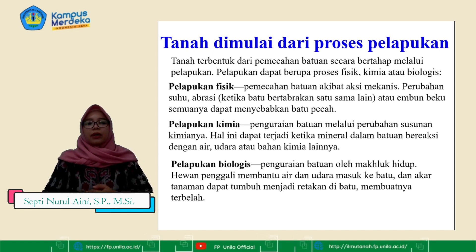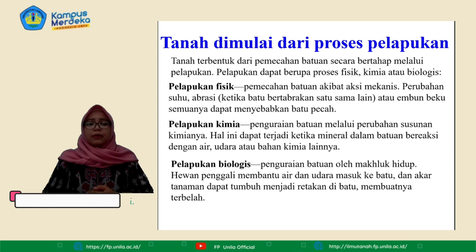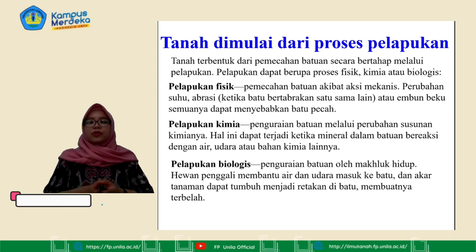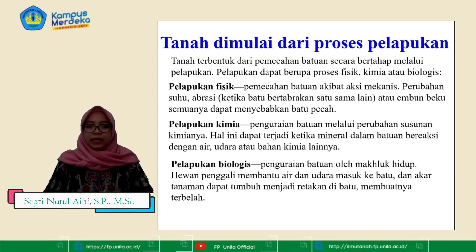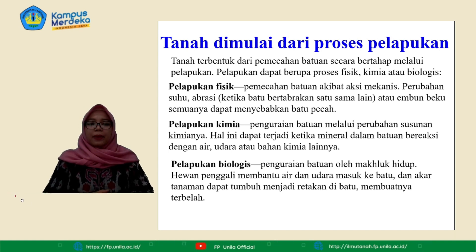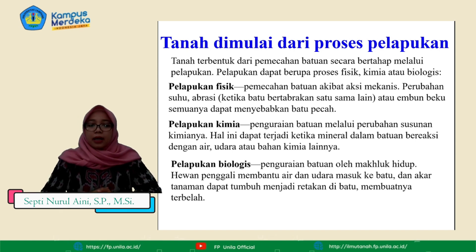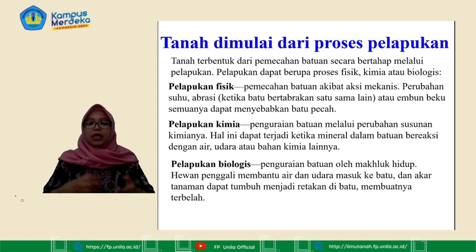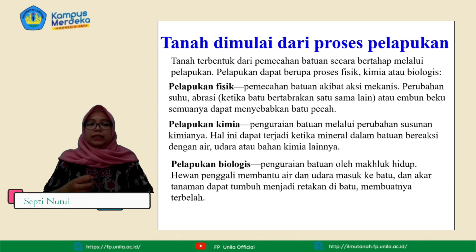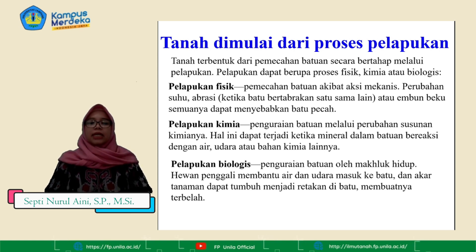Yang kedua yaitu pelapukan kimia, di mana pelapukan kimia ini merupakan penguraian batuan melalui perubahan susunan kimianya. Hal ini dapat terjadi ketika mineral dalam batuan bereaksi dengan air, udara, atau bahan kimia lainnya. Yang ketiga yaitu pelapukan biologis. Pelapukan biologis ini merupakan penguraian batuan oleh makhluk hidup. Hewan penggali akan membantu air dan udara masuk ke dalam batu dan akar tanaman dapat tumbuh menjadi retakan di batu sehingga membuat batu tersebut menjadi terbelah.